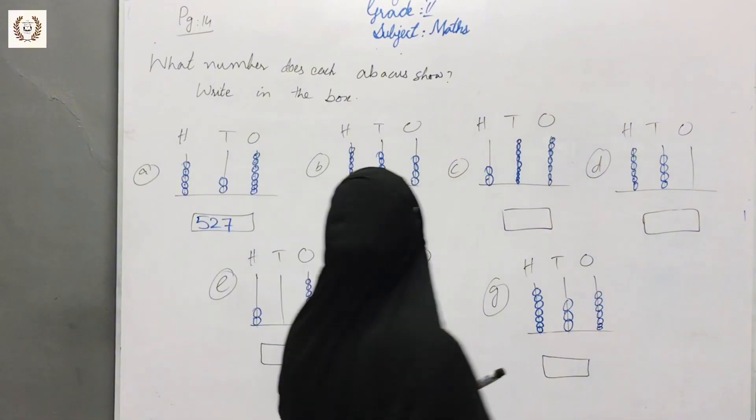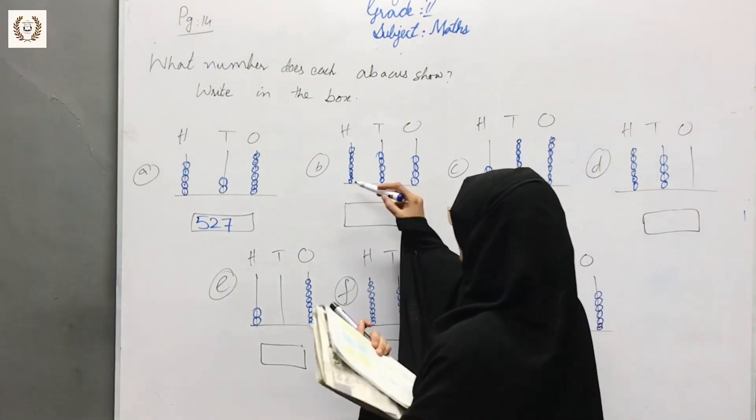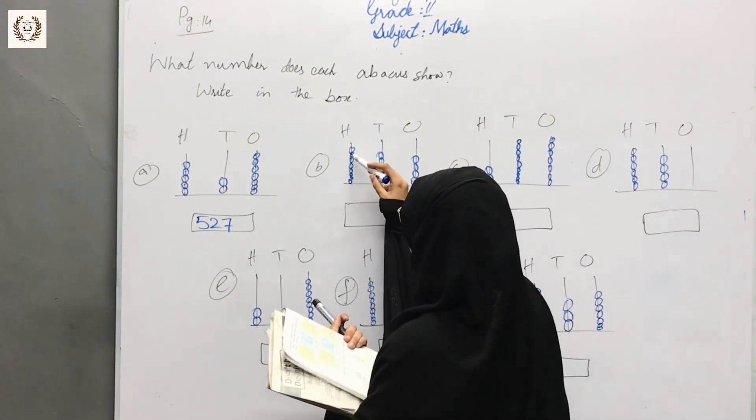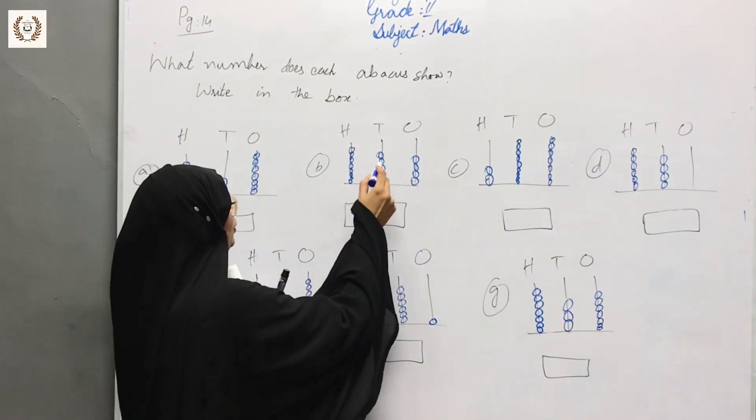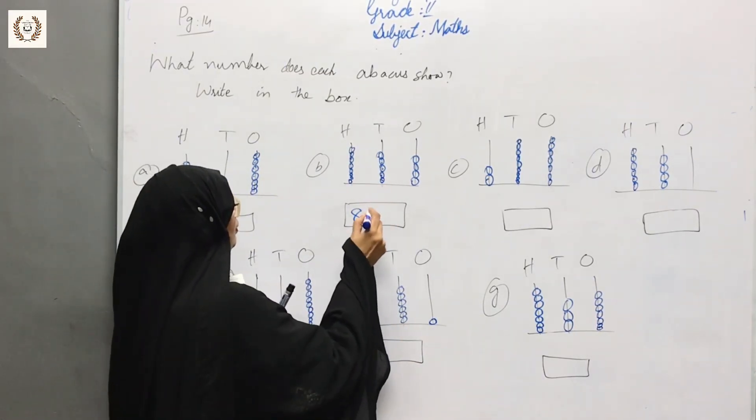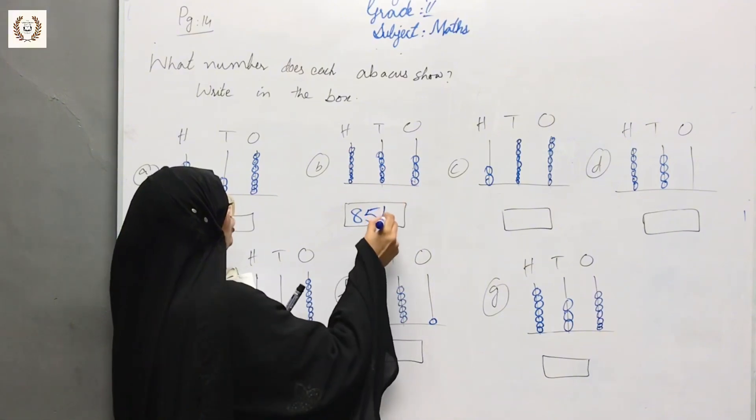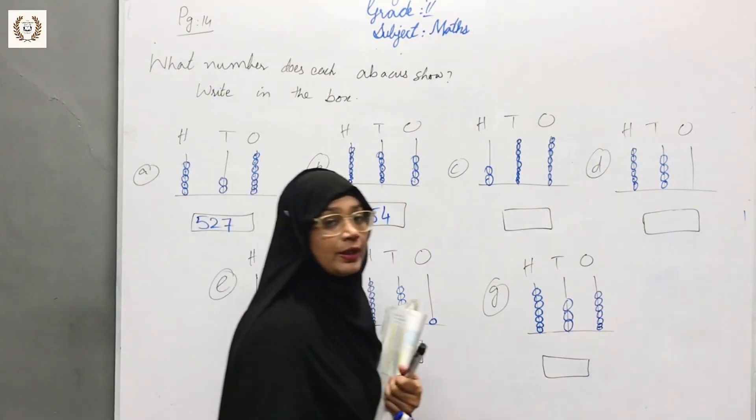Now let's see how many hundreds you have: 1, 2, 3, 4, 5, 6, 7, 8. That's 800. And how many tens? 1, 2, 3, 4, 5. Five tens. And ones: 1, 2, 3, 4. So this is 854.